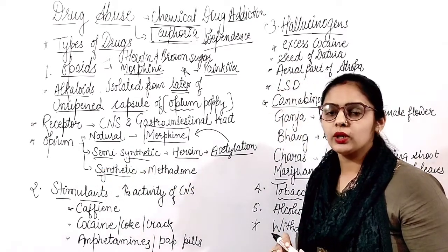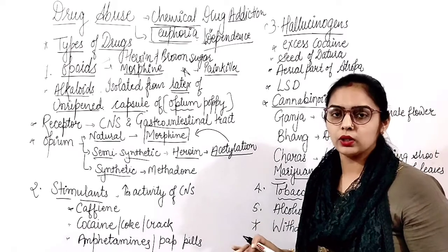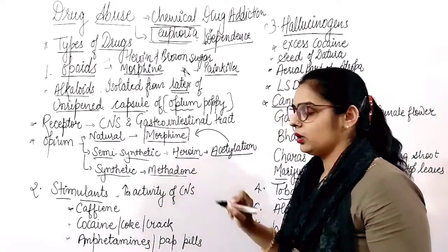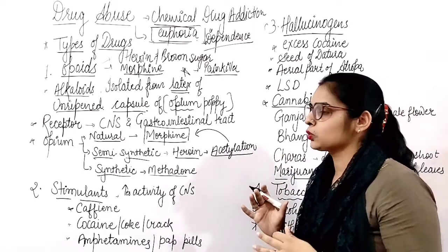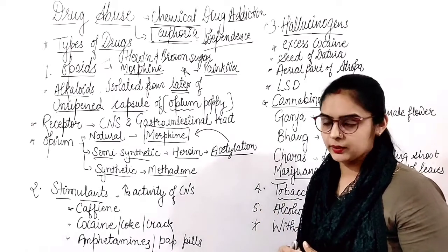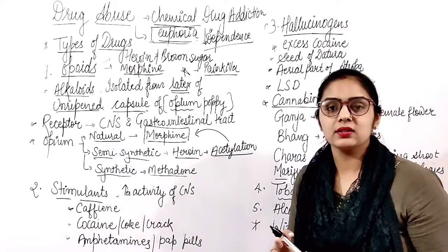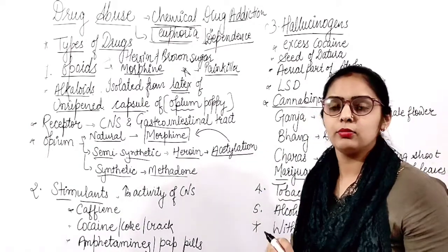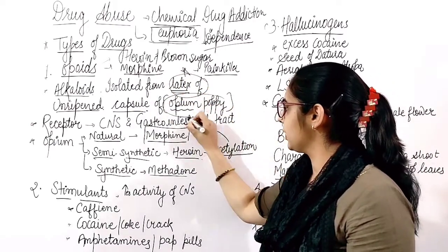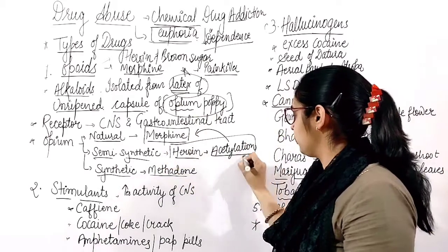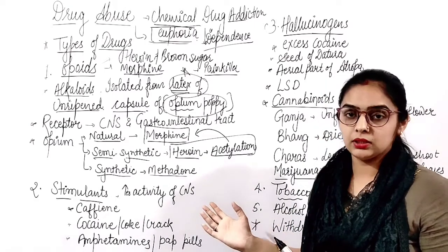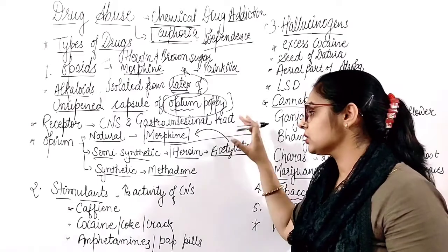Synthetic opioids have a structure similar to morphine. For example, methadone. Opioids are consumed by snorting and inhaling. There are many questions about this. Morphine structure has been given in NCERT, which is important. Questions about where morphine comes from and which parts are used are common.